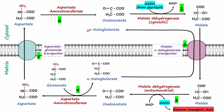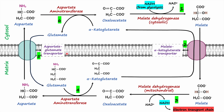Once alpha-ketoglutarate is in the cytosol, it is transaminated to form glutamate with the help of aspartate aminotransferase. Glutamate from the cytosol is then transported into the mitochondria in exchange for aspartate through the aspartate-glutamate transporter, which is another antiporter that transports glutamate and aspartate at the same time in different directions.